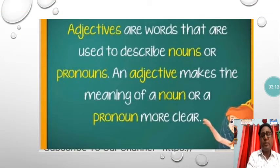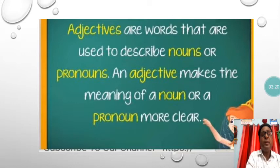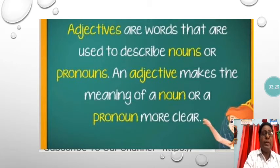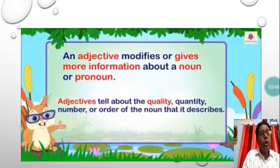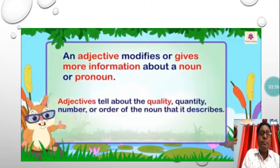Let us see here about adjectives. There is something more you have to remember and learn. Adjectives are words that are used to describe nouns or pronouns. In another way, an adjective makes the meaning of a noun or pronoun more clear. An adjective modifies or gives more information about a noun or pronoun — that means adjectives tell about the quality, quantity, number, or order of the noun that it describes.